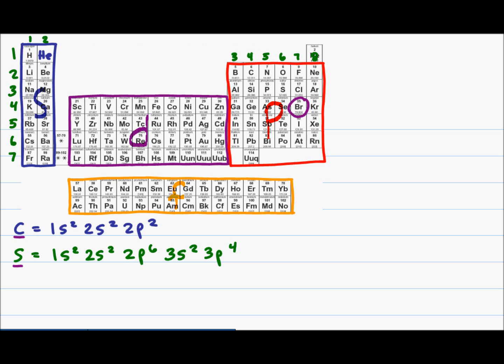And so you fill 4s and then 3d. The first d level is 3d, then we have 4d, 5d, and 6d.